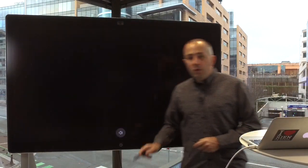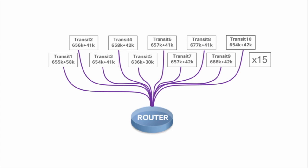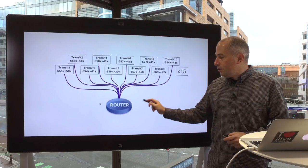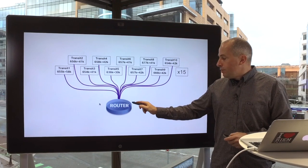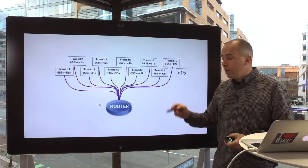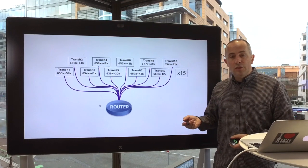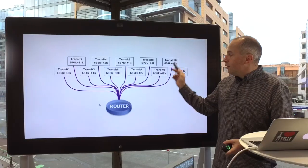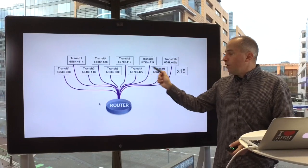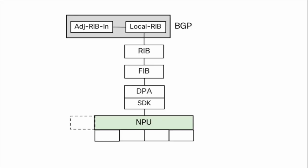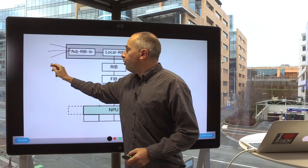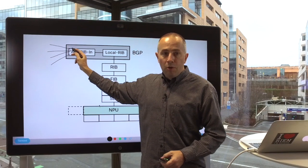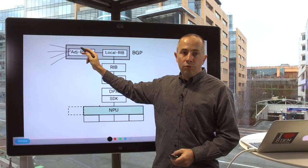The demo will be fairly simple. We will have 15 times the internet advertised inside a router, and this router will be a 5508 chassis with a line card not using external TCAM. We are talking about real internet routes here — something recorded through real V4 and V6 internet views. So we will have 15 times the internet V4 and V6 advertised to the box and received by our BGP process.